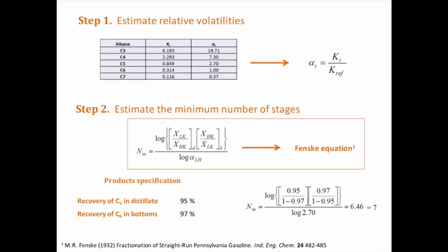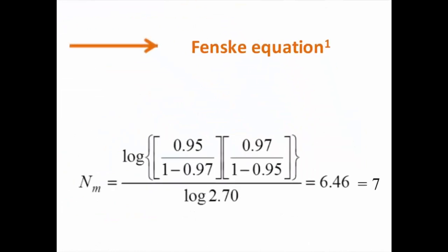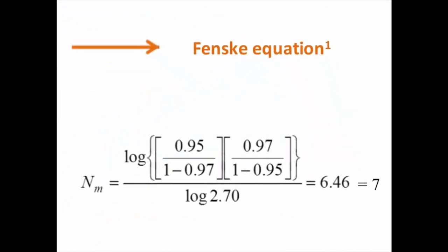The next step is to estimate the minimum number of stages using Fenske equation. In this case, the minimum number of stages are 6.46.